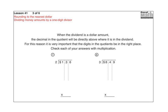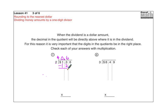Number seven: two into a dollar thirty-six. First, bring that decimal point straight up to the top line, and bring the dollar sign up as well. Two goes into one zero times, so combine that one with the three to make thirteen. Two goes into thirteen six times — two times six is twelve, close enough. Multiply, subtract, bring down the six, and two goes into sixteen eight times. Eight times two is sixteen; subtract and get zero.